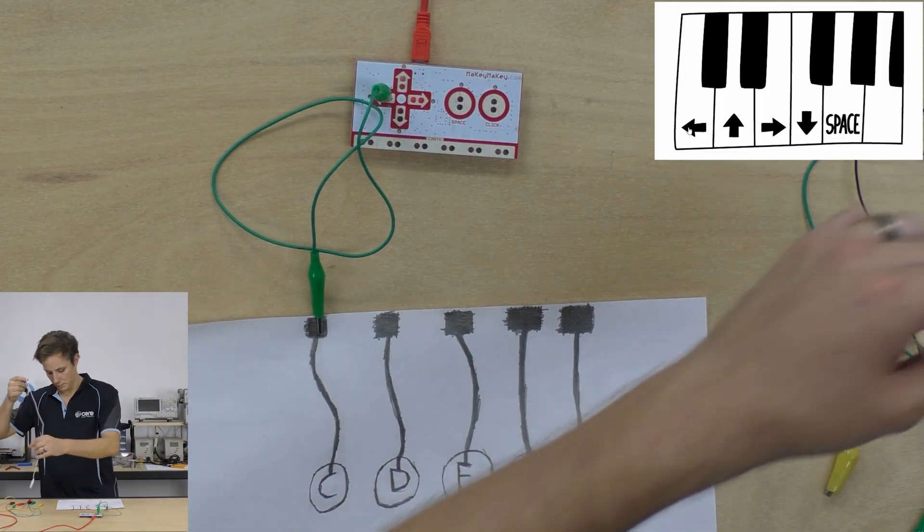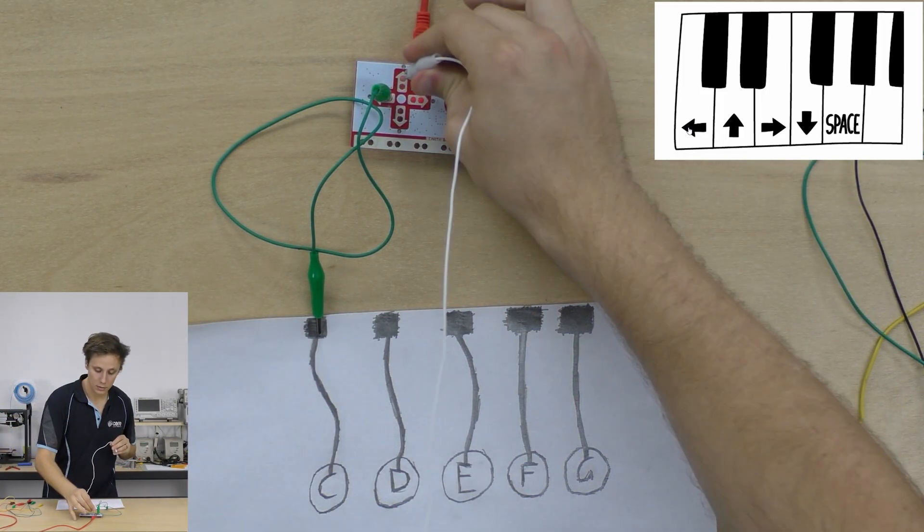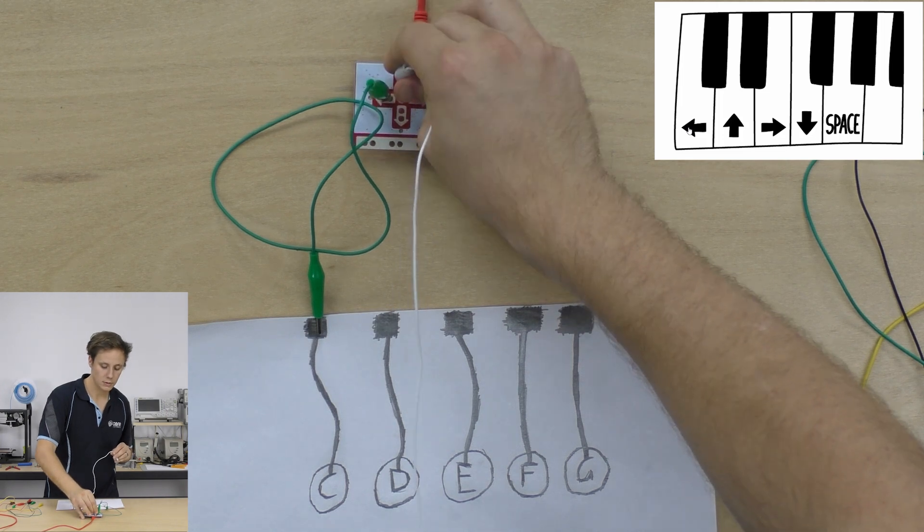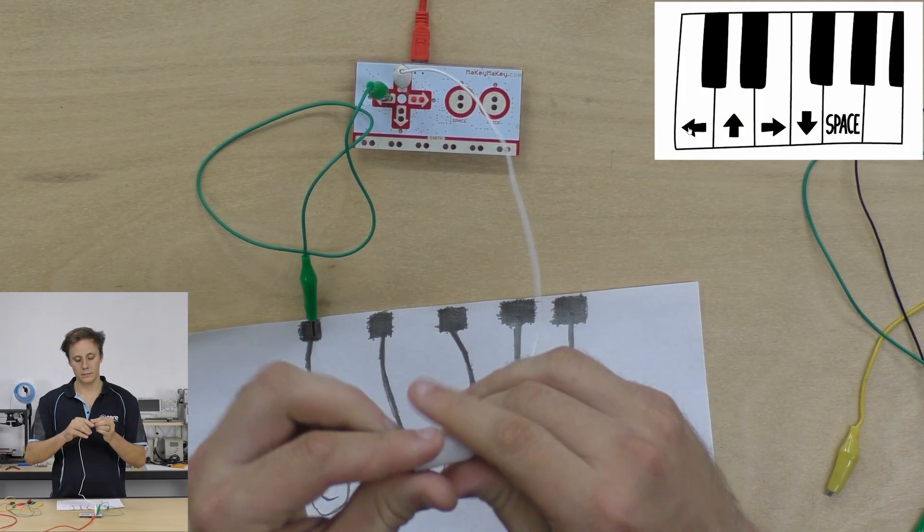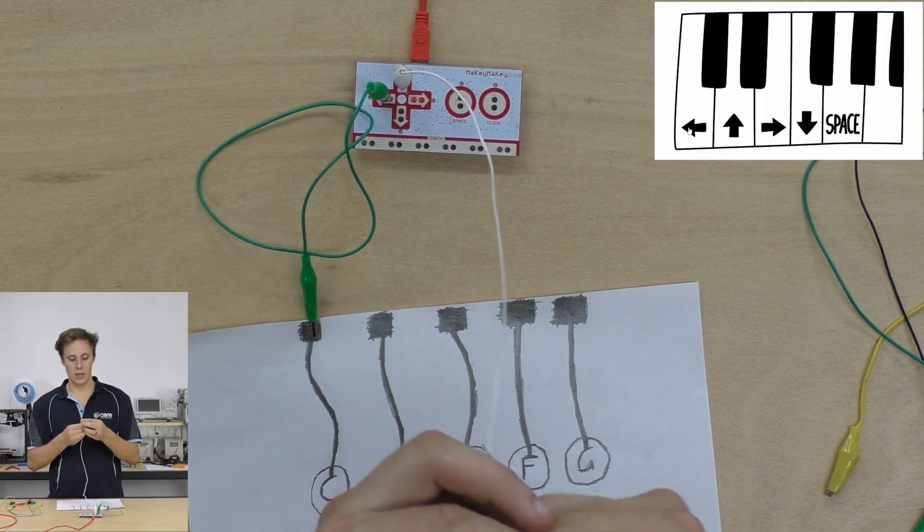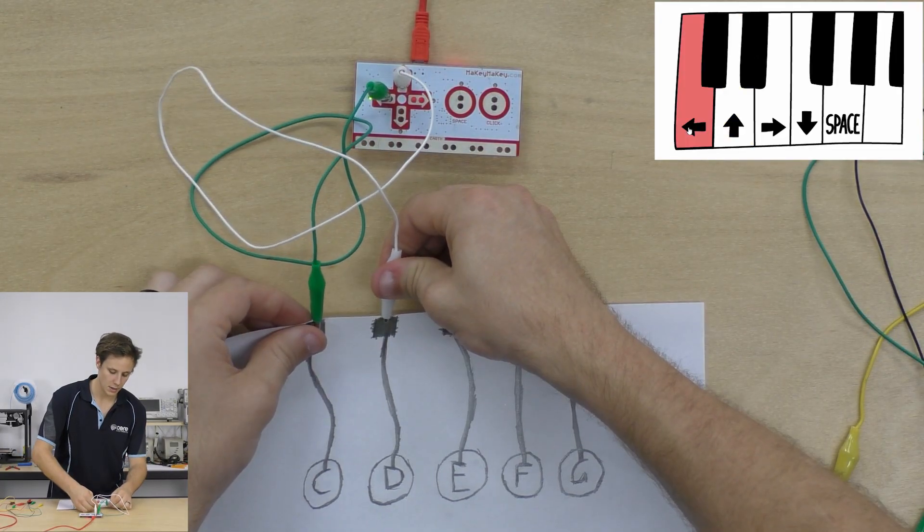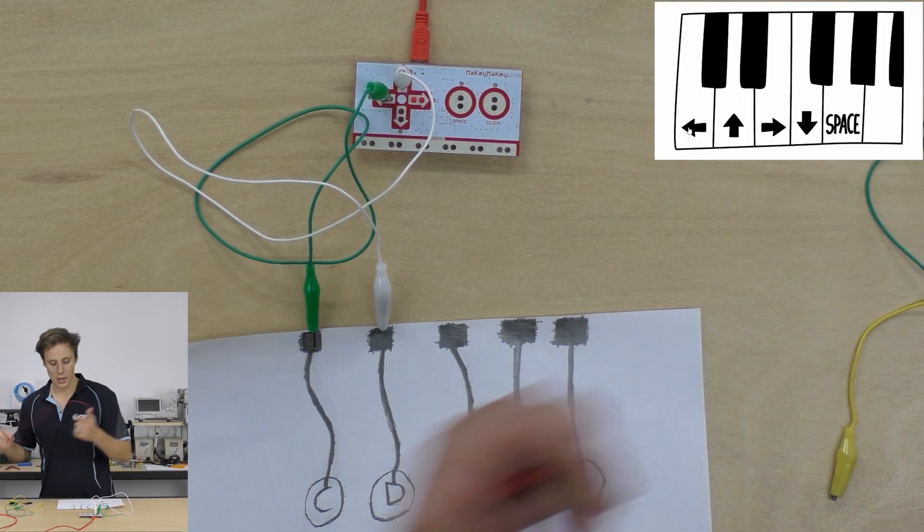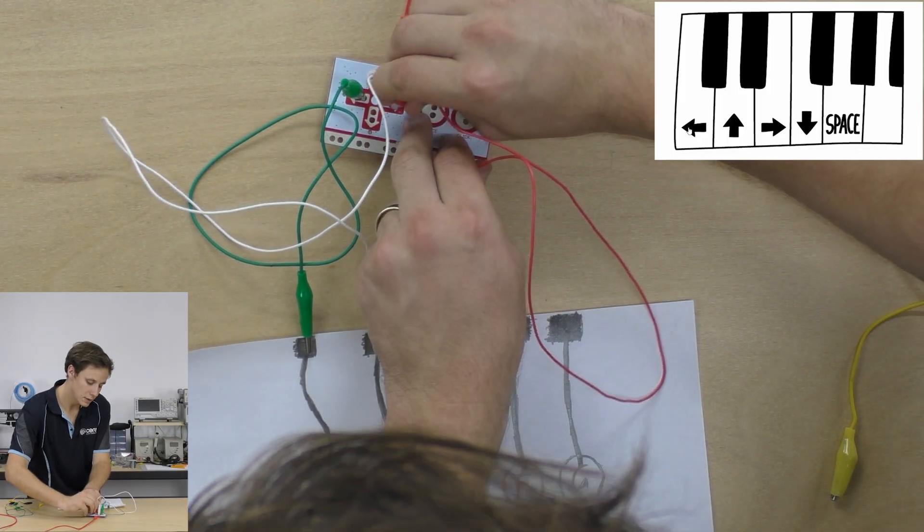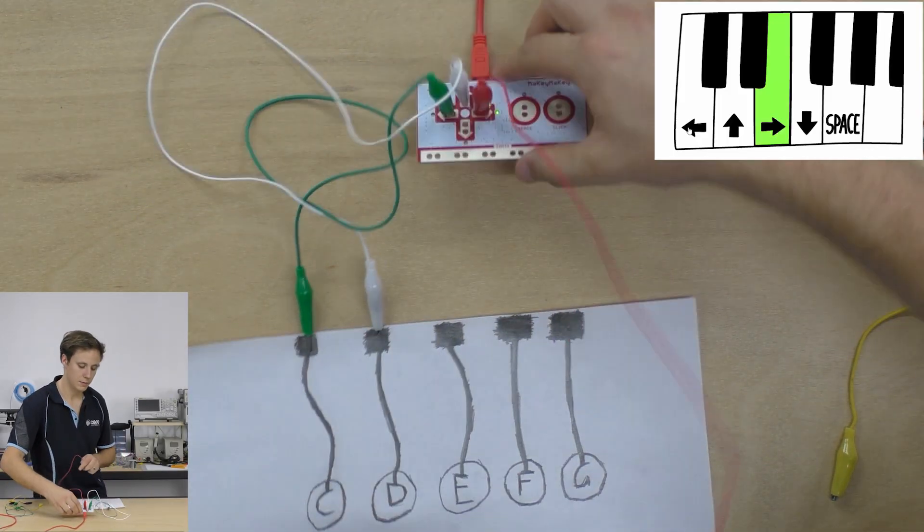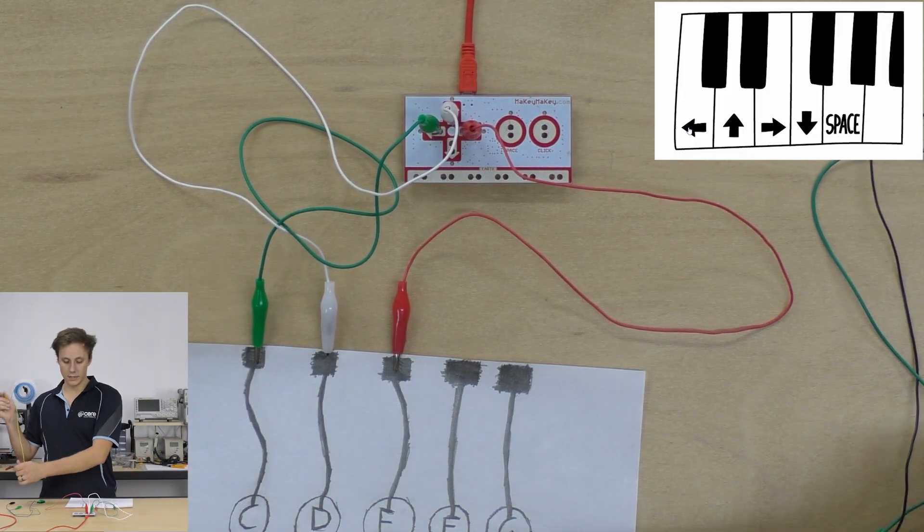Fantastic. So now get another alligator clip onto the up pad, white alligator clip. Just bring a bit more of the pad exposed so it makes a nice connection with it. And then we can see the next one is the right arrow key. So we want to connect that up. And the next one is our down arrow key.